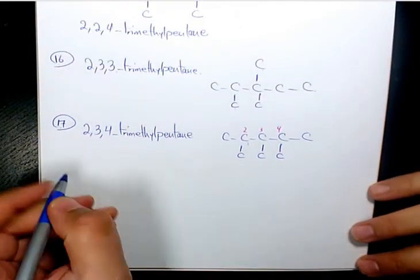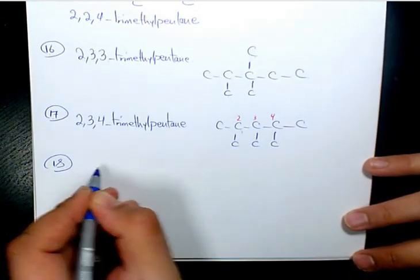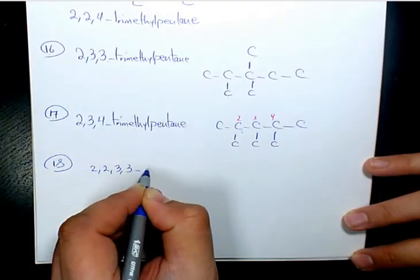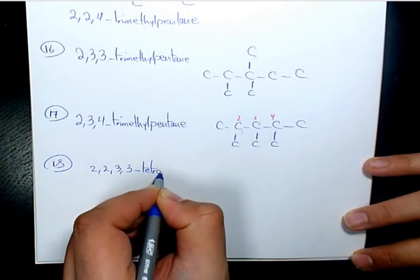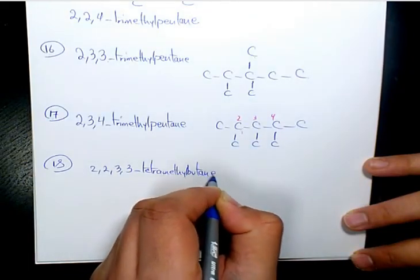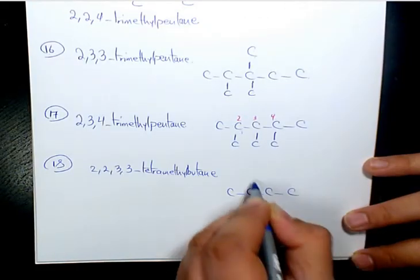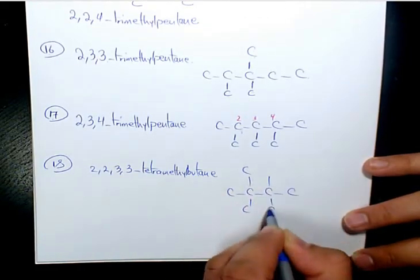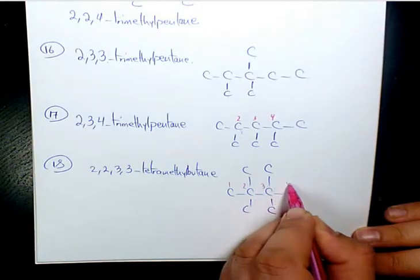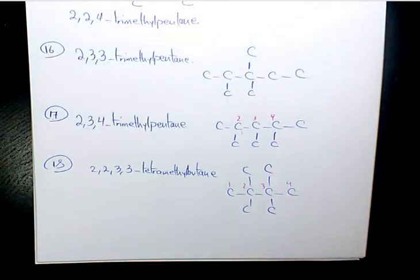Finally, the last one — number eighteen — is going to be 2,2,3,3-tetramethylbutane. It has 1, 2, 3, 4 carbons on the main chain with two methyl groups on carbon two and two methyl groups on carbon three. That's why we have 2,2,3,3-tetramethylbutane.